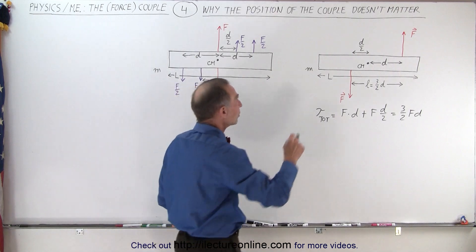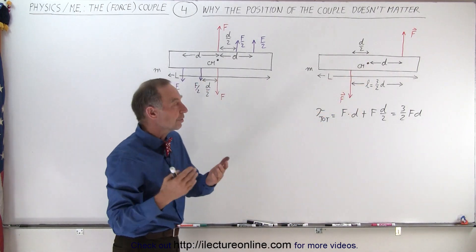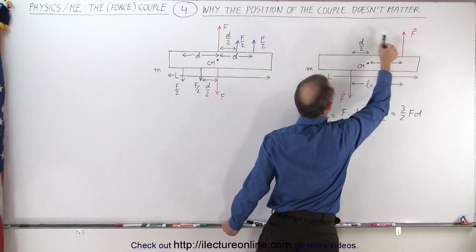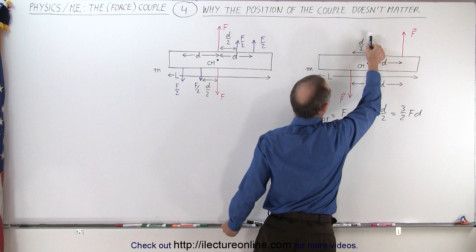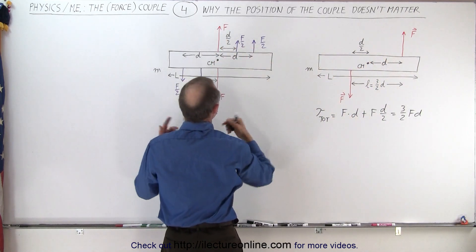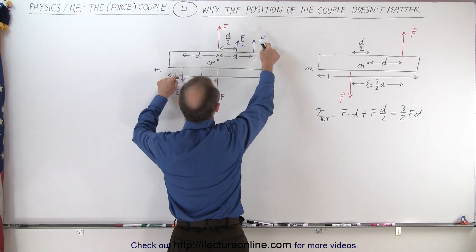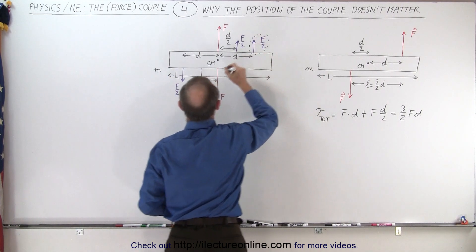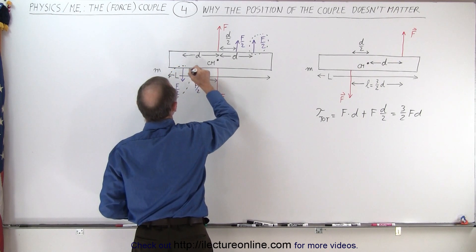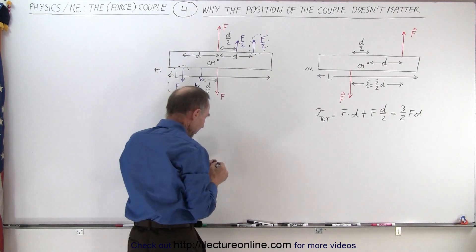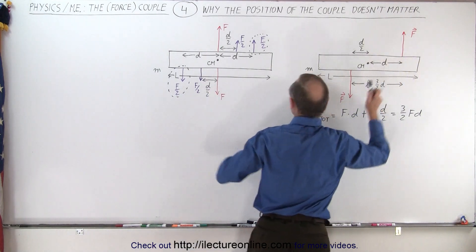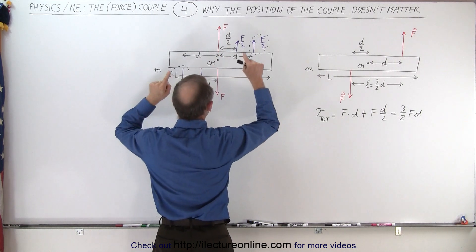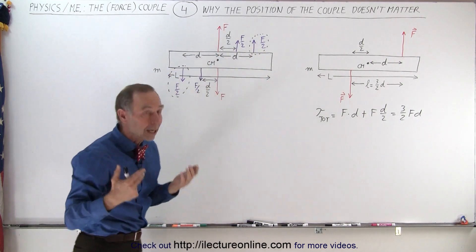However, now let's take each of the two forces and do their equivalent force combination. In other words, what we're going to do is move this force to the location of the center of mass — the line of action of the center of mass — and then add to that these two forces right here, forming a couple.